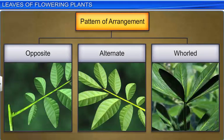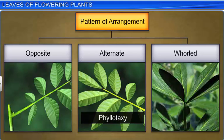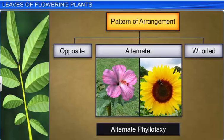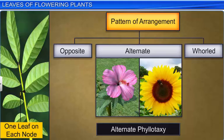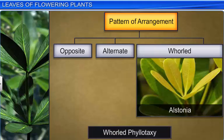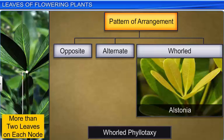Apart from classifying leaves as simple and compound, they are also identified as opposite, alternate, or whorled, on the basis of their pattern of arrangement on a stem or a branch. This is termed as phyllotaxy. In opposite phyllotaxy, there are two leaves on one node, arranged opposite to each other, as in calotropis and guava. In alternate phyllotaxy, only one leaf arises at each node, and the leaf at the next node is in the opposite direction, as seen in plants like hibiscus and sunflower. Finally, in whorled phyllotaxy, two or more leaves appear at a node, forming a whorl, as seen in Alstonia.